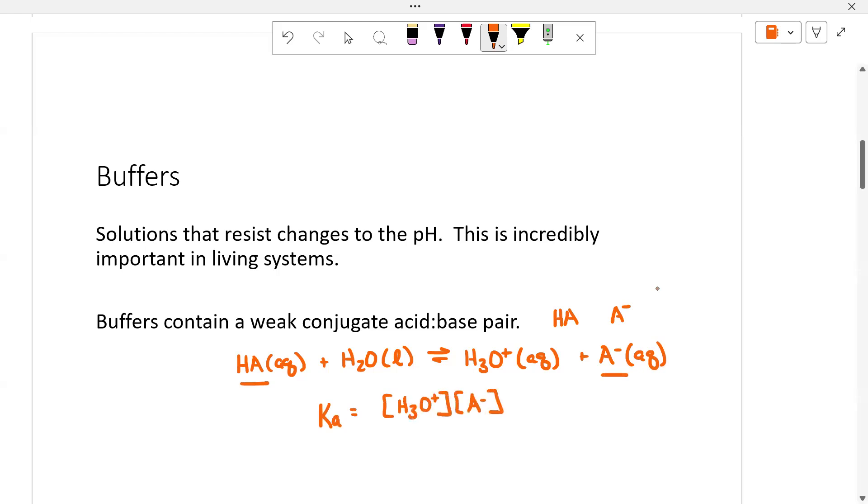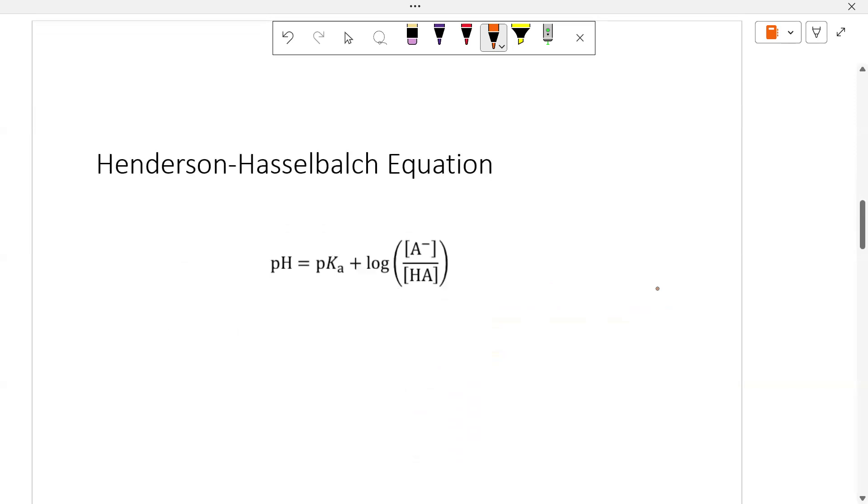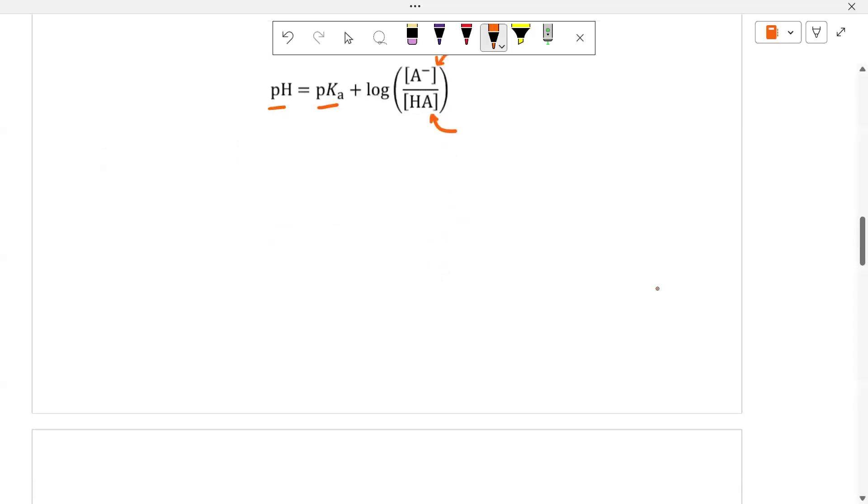You could work all the buffer problems using that KA expression, but it turns out if we take the negative log of this, we get a very useful equation called the Henderson-Hasselbalch equation, and it makes a lot of the math much, much easier. So notice what we've got. pH equals the pKa, the negative log of the KA value, plus the log of the ratio of the conjugate base concentration over the conjugate acid. They're in the same things on top. This would be in the KA expression.